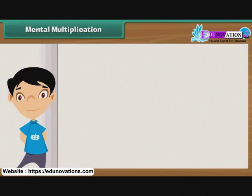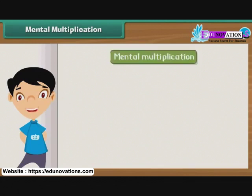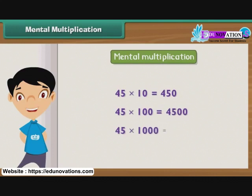Having learnt mental addition and subtraction, let us proceed to learn mental multiplication. To multiply a number by 10 or its multiples, add the same number of zeros to the result as in the multiplier.